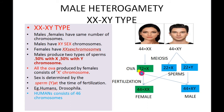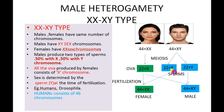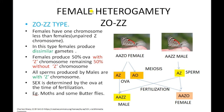The sex depends upon the fertilizing sperm. If a sperm containing the X chromosome fuses with an ovum, a female individual is born. If the ovum fuses with a sperm containing the Y chromosome, the baby is male. In India, women are often blamed for having a baby girl, but the sex depends upon the sperm, not the ovum.